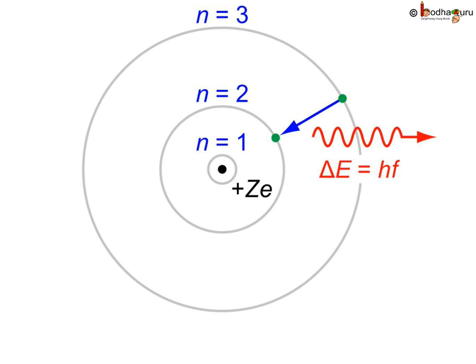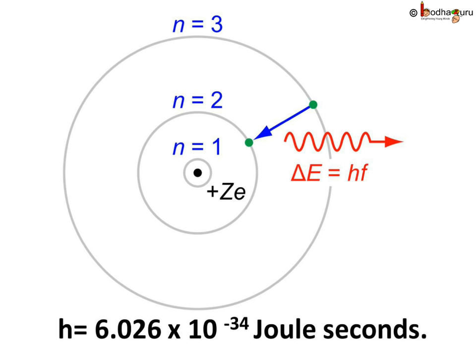Thus, Planck postulated that electromagnetic energy can be gained or lost in discrete values or quanta, not in continuous manner. The value of Planck's constant is 6.026 multiplied by 10 to the power minus 34 joule seconds.